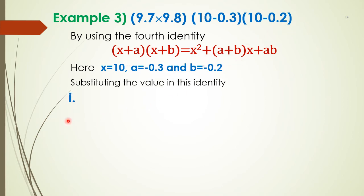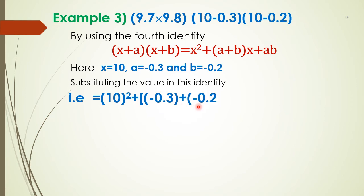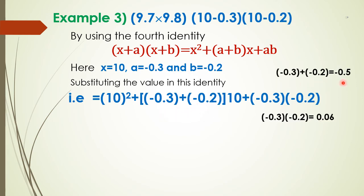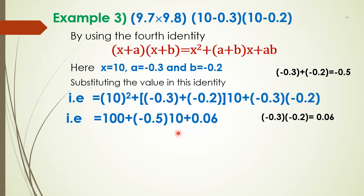Substituting the values: (10)² plus (minus 0.3 + minus 0.2) into 10 plus (minus 0.3) into (minus 0.2). Here 10 squared is 100, and minus 0.3 plus minus 0.2 is minus 0.5. So this equals 100 plus (minus 0.5) into 10, plus 0.06.